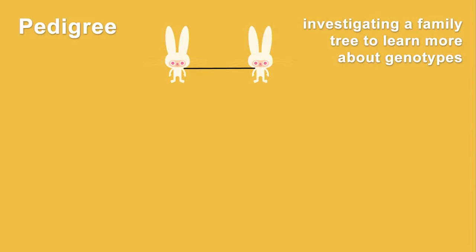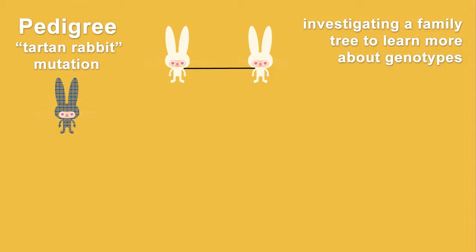Just for fun, let's use some cute rabbits to create a pedigree. The trait here is the colorful tartan rabbit — this doesn't really exist; we're just making this up for study purposes. Let's say the tartan rabbit trait is autosomal recessive, so the only way a rabbit can be tartan is to have two recessive alleles, or small t small t.